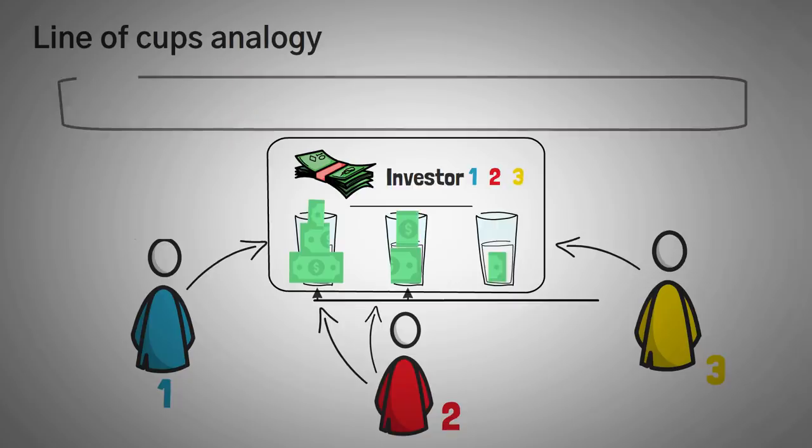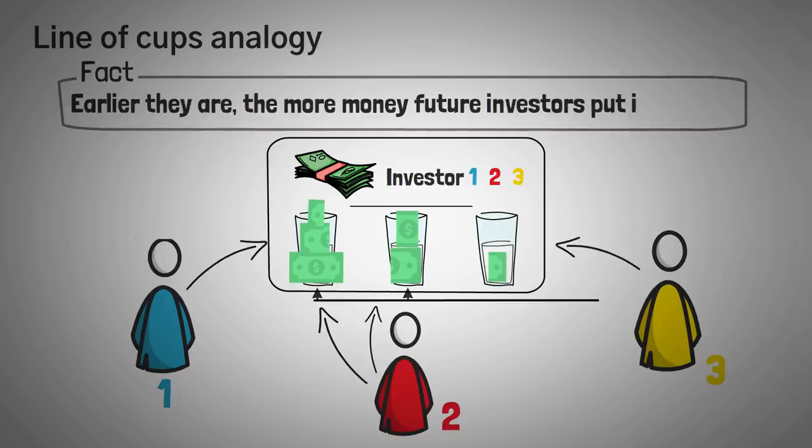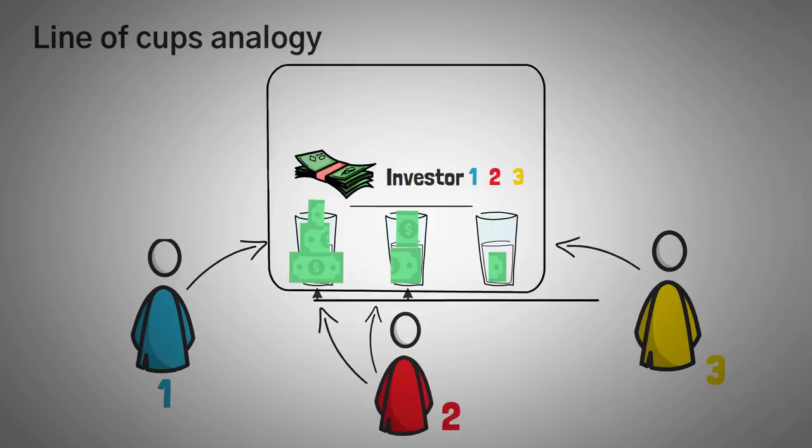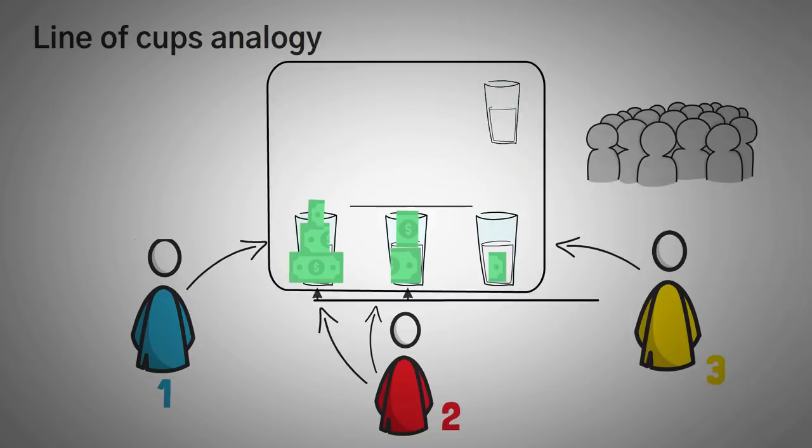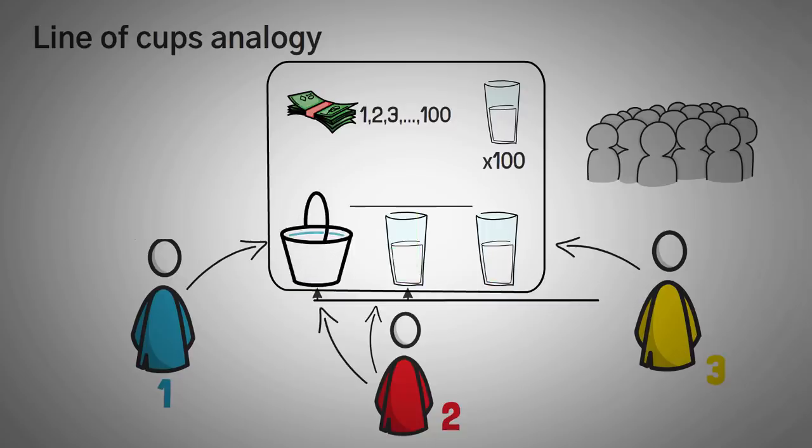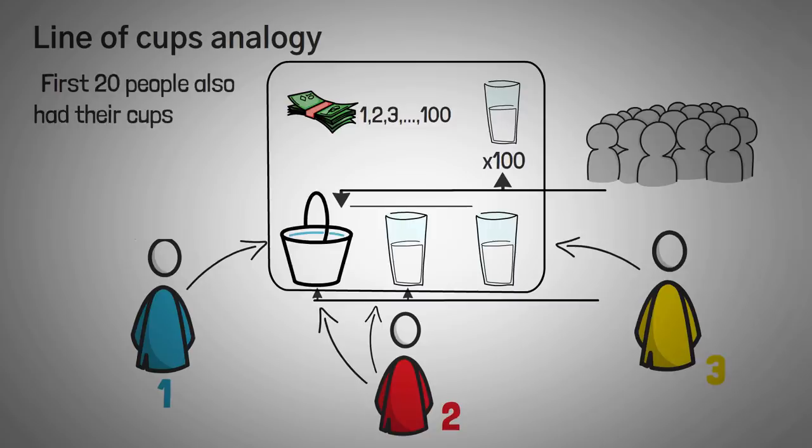So each investor has their own individual cup, and the earlier they are, the more people ahead of them will put money into their own cup. Now imagine this all the way out to 100 cups. The first guy had a cup so full of cash, he had to upgrade from a cup to a bucket, simply because those 99 other people had put their money into his cup. Even more so, the first 20 people also have their cups loaded. Way more investors came along and redeposited that money back into their own cup.